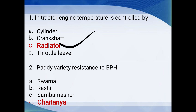Which paddy variety is resistant to BPH — Brown Plant Hopper? Options: Swarna, Rashi, Samba, Mashuri, Chaitanya. Chaitanya is the variety which is resistant to Brown Plant Hopper.